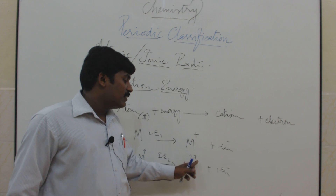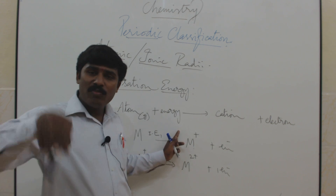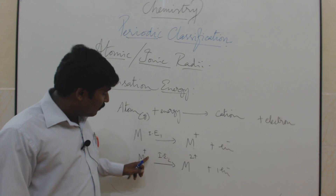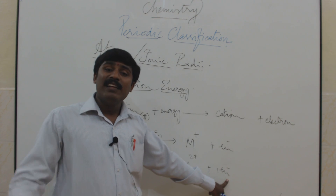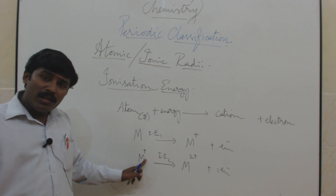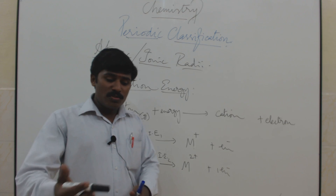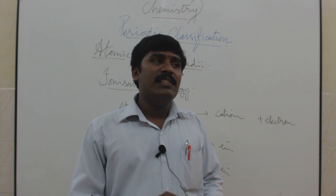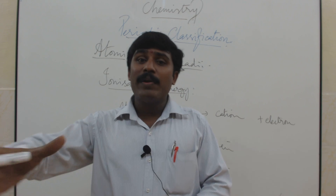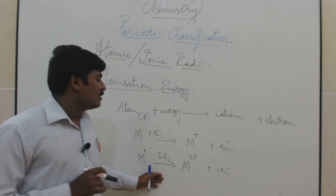Why is the second ionization energy greater? Initially you have an electron in the outermost shell and can remove it relatively easily. But the second ionization energy involves removing an electron from a cation — M⁺ — which is not easy, because the remaining electrons are held more tightly. So the second ionization energy is greater than the first.